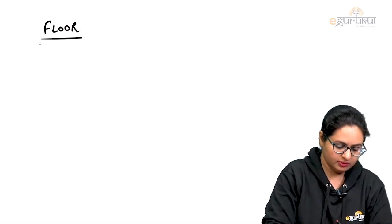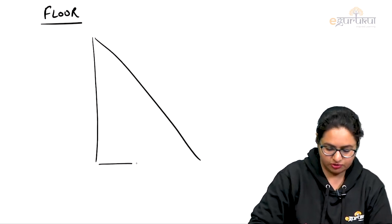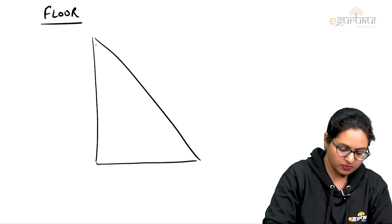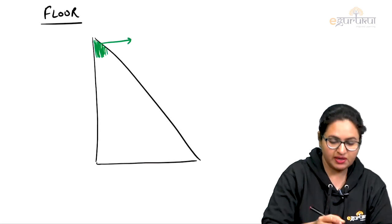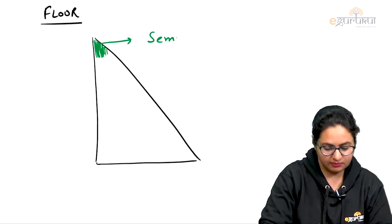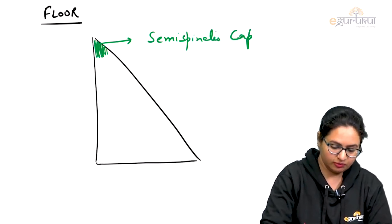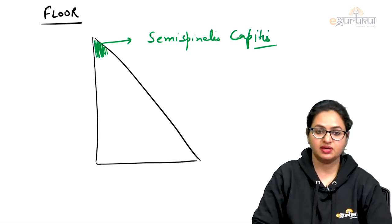Now, regarding the floor of this posterior triangle, we will draw a schematic diagram. The muscle which is present towards the apex is the semispinalis capitis muscle, which is contributing to the floor.